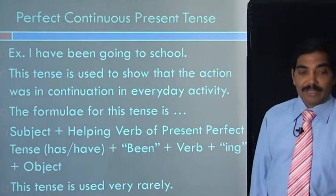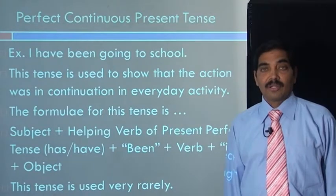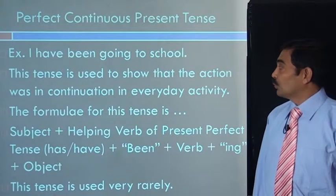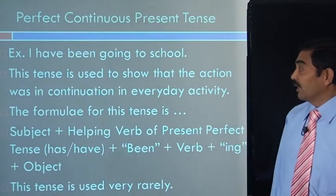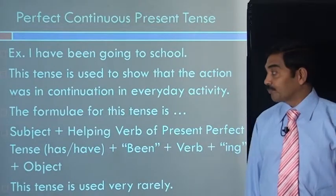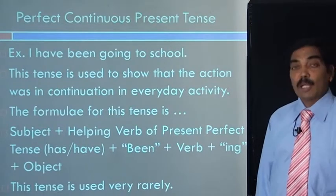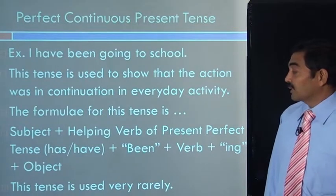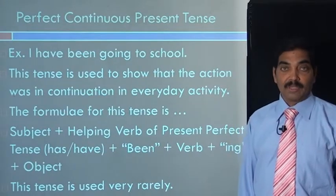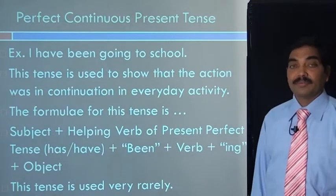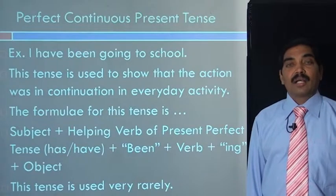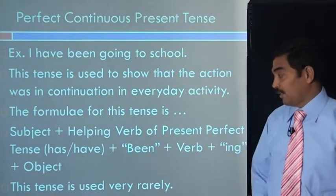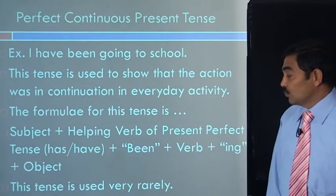Let us take the fourth one: perfect continuous present tense. Let us take an example: I have been going to school. This tense is used to show that the action was in continuation in everyday activity in past. The formula for this tense is subject plus helping verb of present perfect tense — has or have — plus been, plus verb plus ing, plus object. Being and ing are added as the tense is continued or was continued in recent past. Please note that this tense is used very rarely.